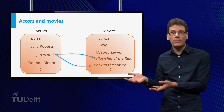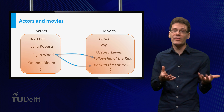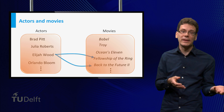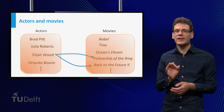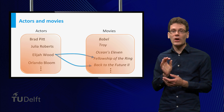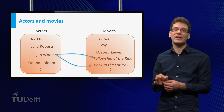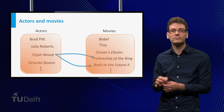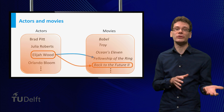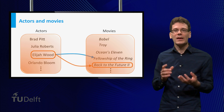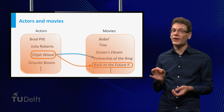For example, Elijah Wood was in Back to the Future 2 and The Fellowship of the Ring. However, we can change the program to produce only the first movie featuring the given actor. In the case of Elijah Wood, this would be Back to the Future 2. Now this computer program defines a function.